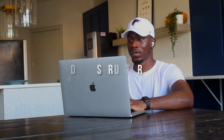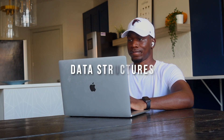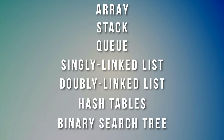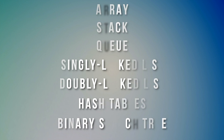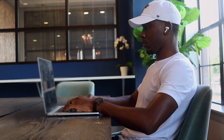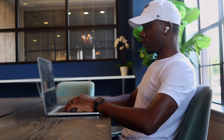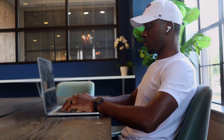When it comes to data structures, keep your eye out for certain terms: array, stack, queue, singly linked list, doubly linked list, hash tables, and binary search. These are things you should keep your eye on. There are more, but those are the ones I know.